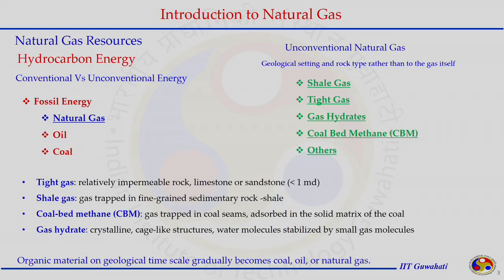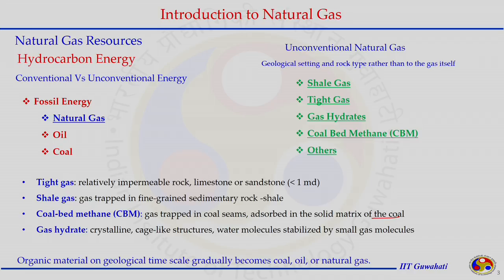Gas hydrate is another form of unconventional natural gas resource where gas molecules exist in a crystalline cage-like structure, stabilized by water molecules. A single gas molecule — either methane or a very light hydrocarbon — is trapped by water molecules, and that form is called gas hydrate.